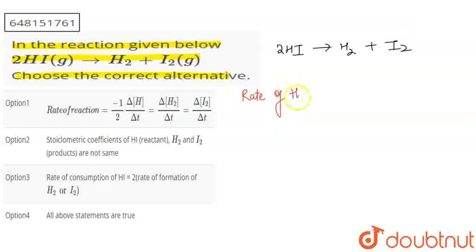The rate of the reaction equals the rate of disappearance of the reactants or the rate of appearance of the products, which is the change in concentration with respect to time. For the reactant HI, the rate will be -d[HI]/dt.